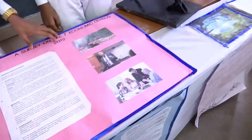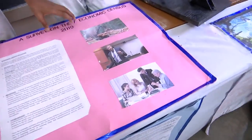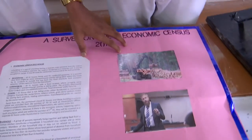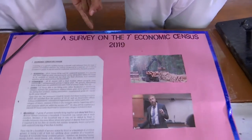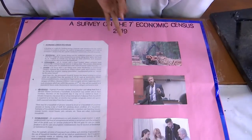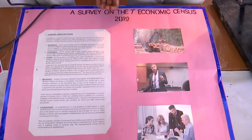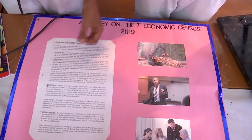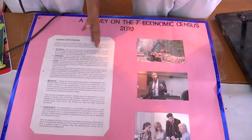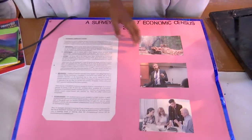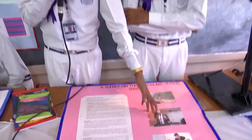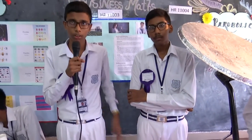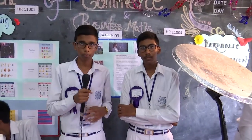It is to find the economic level of the family. Using the statistical method, we can find the average income and the percentage of the family. There are many types: residential, commercial, and others. We can also find the economic level of the family using this statistical method. Thank you.